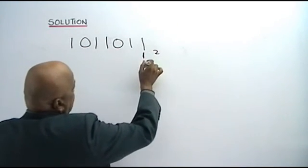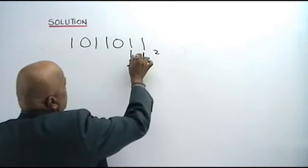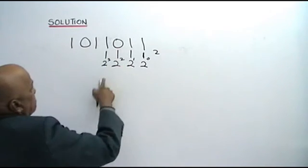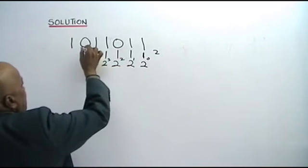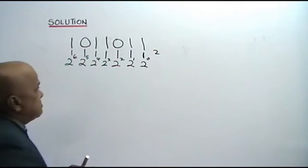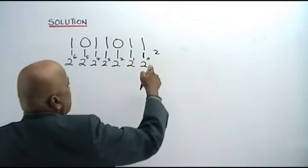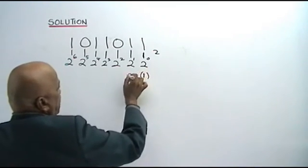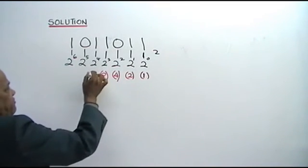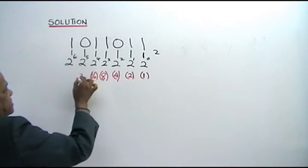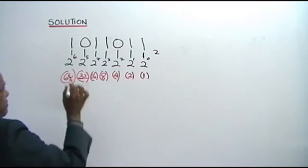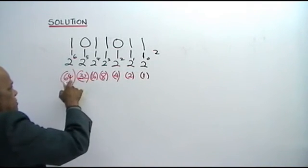This digit represents 2 to the power of 0. This represents 2 to the power of 1. This digit represents 2 squared. This digit represents 2 cubed. This represents 2 to the power of 4. This represents 2 to the power of 5. This represents 2 to the power of 6. 2 to the power of 0 is 1. 2 to the power of 1 is 2. 2 squared is 4. 2 cubed is 8. 2 to the power of 4 is 16. 2 to the power of 5 is 32. 2 to the power of 6 is 64.